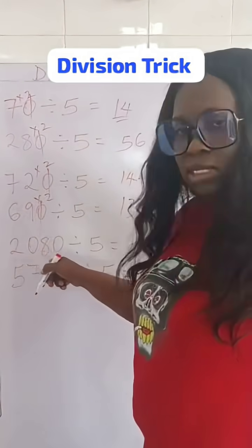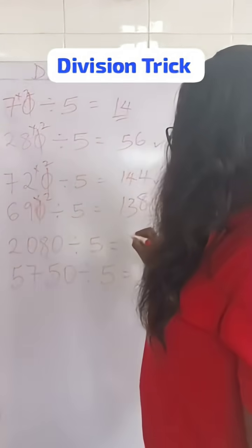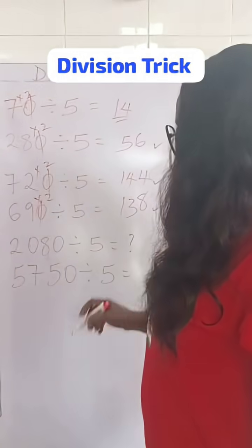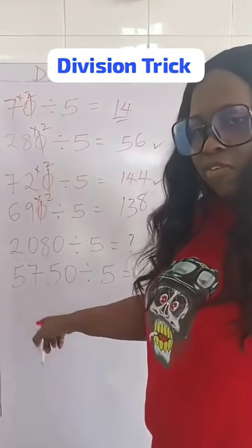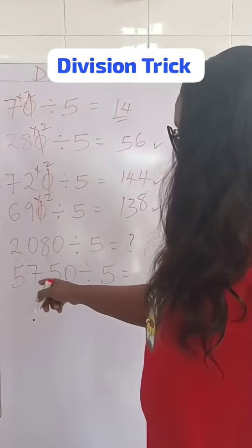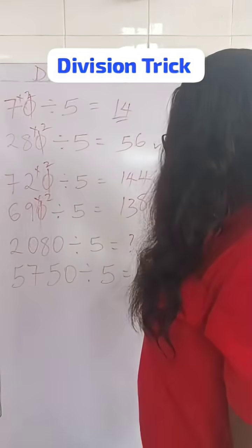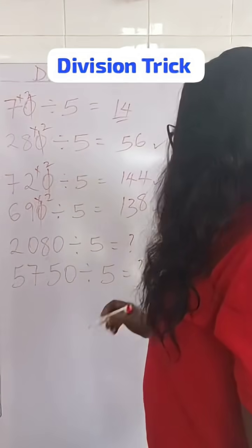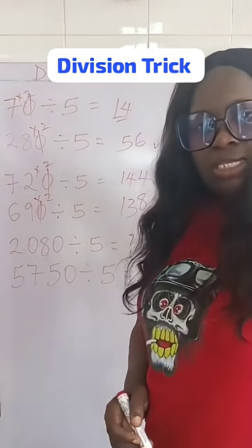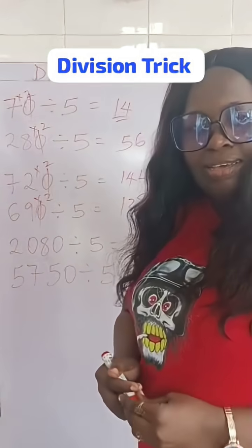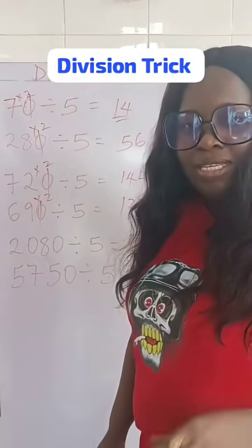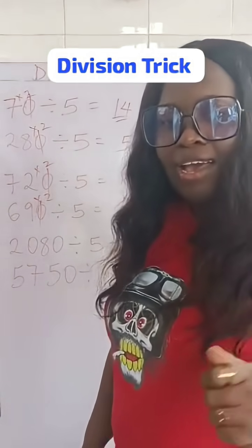What do you think is going to be the answer for 2080 divided by 5 and 5750 divided by 5? I want to see these answers in the comments. Bye-bye.